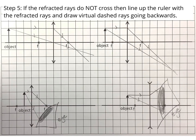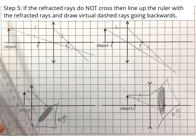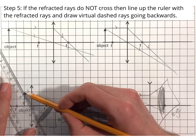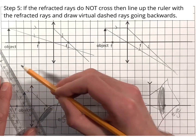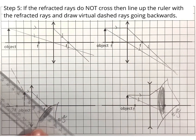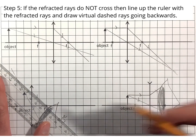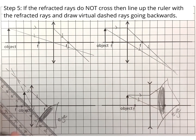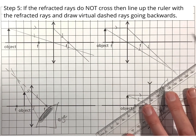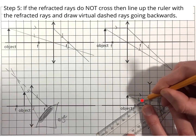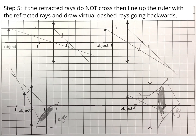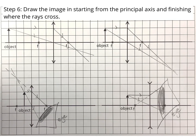Step five only applies to the bottom two diagrams. For these, line up the ruler with the refracted ray and draw a dotted line going backwards — that's a virtual ray. Repeat that for the second refracted ray. On the last diagram you only need to do one, but it doesn't matter if you do both.